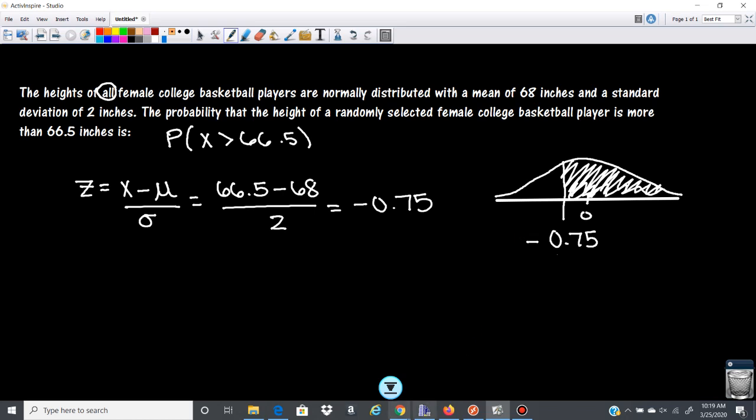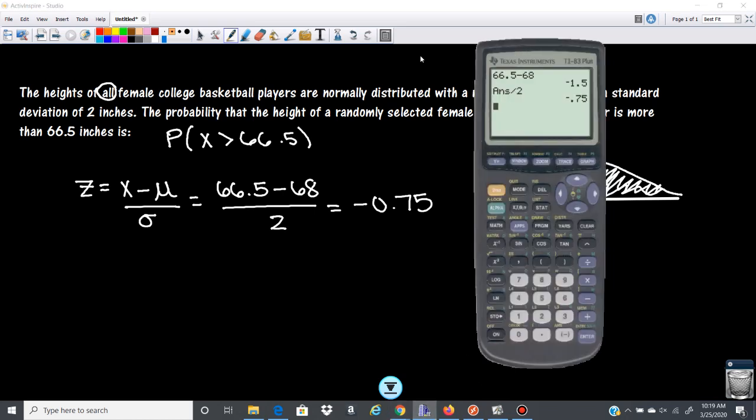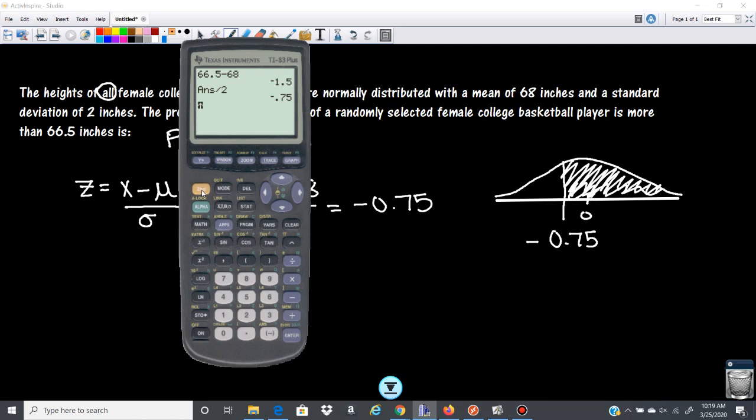So we're going to go in our calculator. We're going to go normal CDF, lower limit, upper limit. So if I go second, vars to my distribution here, our lower limit is negative 0.75. And then our upper limit, we're going to put 99 because we're going all the way to the right. And we're going to get 0.773.